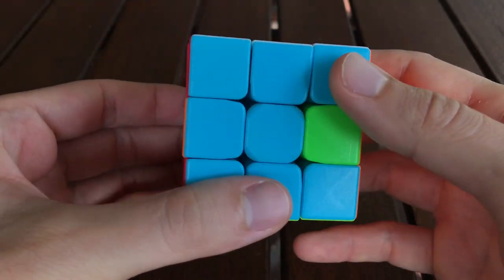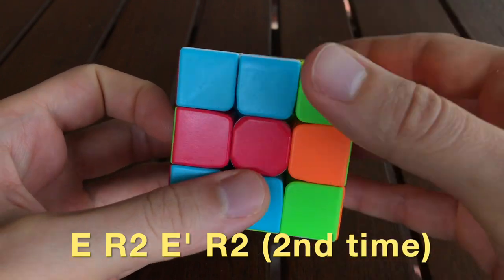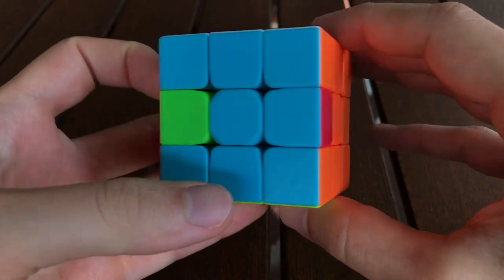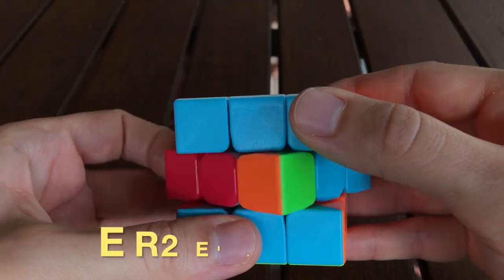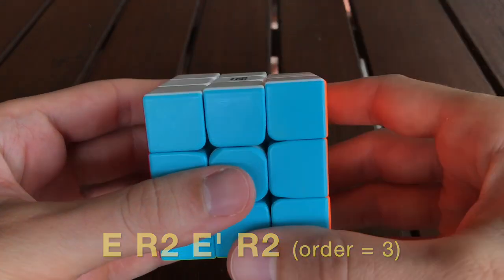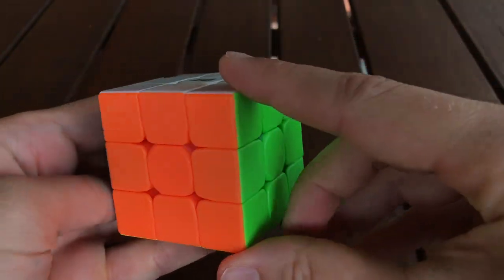So if we repeat this algorithm again, it cycles those three edge pieces one more time. And finally a third time returns the three edge pieces to their original positions. That means this algorithm has order three.